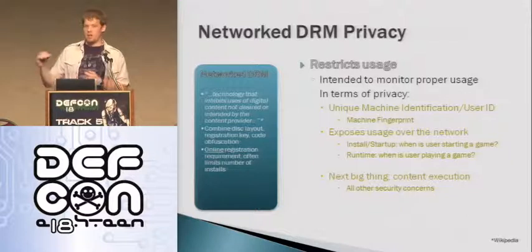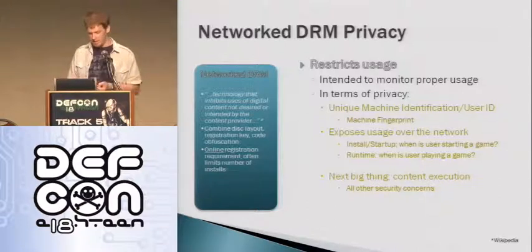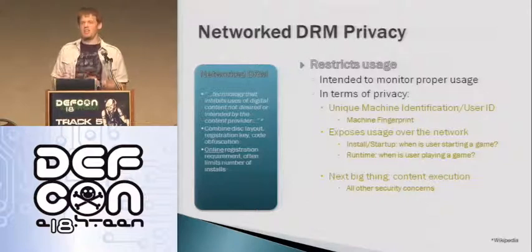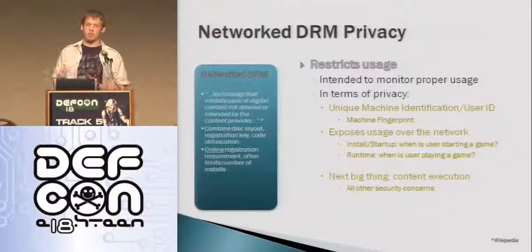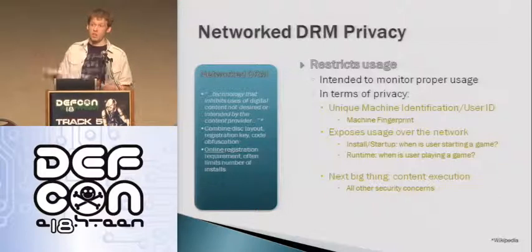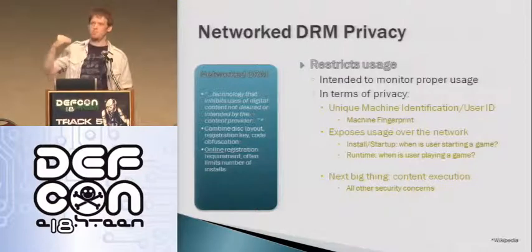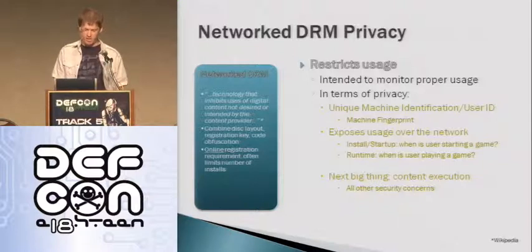One big thing on the horizon is content execution, which Ubisoft in particular has been talking about. The idea is that you don't have the full program on disk — you have most of the program, and at specific points it pulls down critical pieces of executable content. This has a privacy aspect in that since these are bigger pieces of content, I can more directly identify what you're doing. But it also means you get executable code through other means — if somebody hijacks this, all bad things can happen. This is on the horizon and may be a concern in about a year or so.